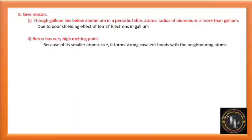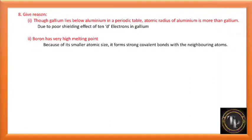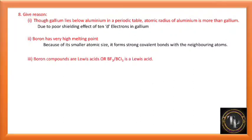Boron has a very high melting point. Because of its smaller atomic size, it forms strong covalent bonds with neighboring atoms. Since the bond is strong, it is difficult to break and we have to provide more energy — therefore the melting point of boron is high.